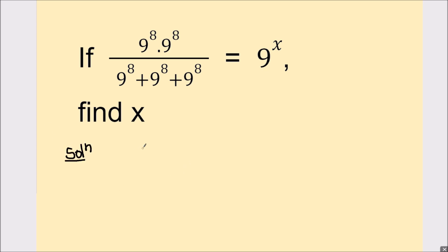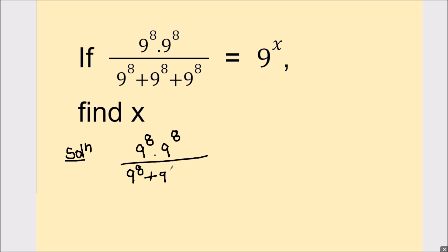First we'll rewrite the equation. That's 9 raised to power 8 times 9 raised to power 8 divided by 9 raised to power 8, plus 9 raised to power 8 plus 9 raised to power 8, equals 9 raised to power x.